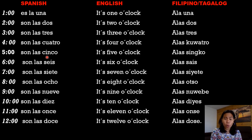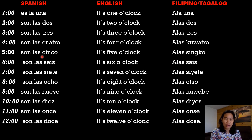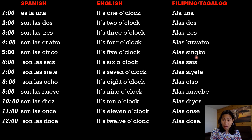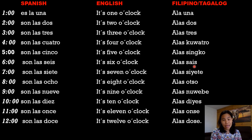Son las cinco. Cinco — it's five o'clock. A las cinco. Same also with cinco: in Tagalog we have the letter S where in Castellano they have letter C. And then the letter C becomes K, and we add M-G. Cinco. Son las seis — it's six o'clock. A las seis, in Tagalog.